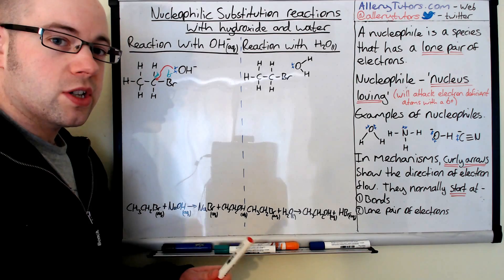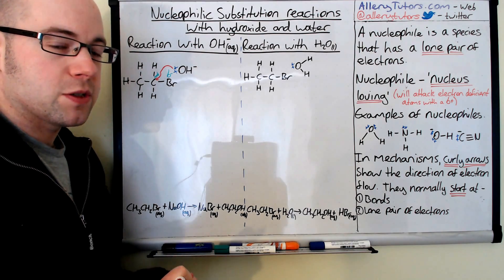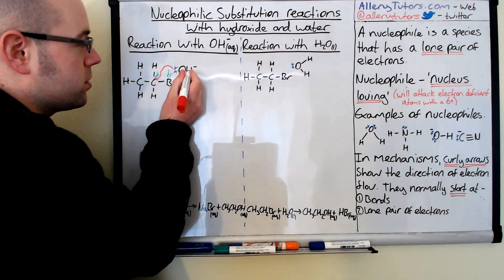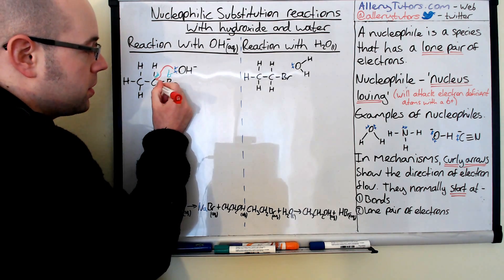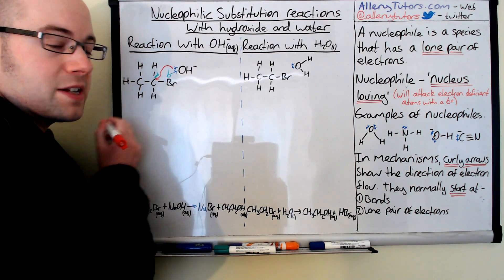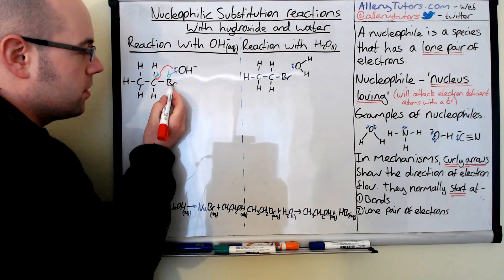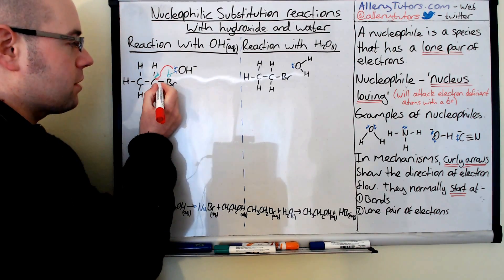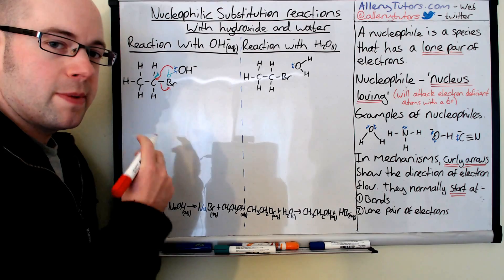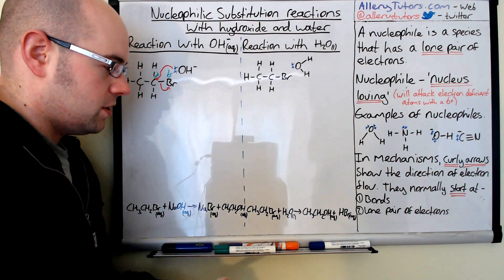So we need to draw another curly arrow to show the breaking of this bond. Now the electrons, because this is forming a bond here, the electrons from this bond will then move onto the bromine atom. So you can see it goes from here onto there. So we're going to draw our curly arrow. It's going to show electrons going from the bond to the bromine. Again, it's really specific. You've got to do that.